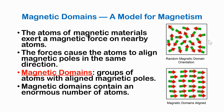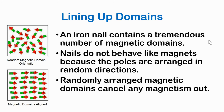Magnetic domains contain an enormous number of atoms — they're gigantic. More than billions, more than trillions, more than zillions — lots and lots and lots. An iron nail contains a tremendous number of magnetic domains. Nails do not behave like magnets because the poles are arranged in random directions. Randomly arranged magnetic domains cancel out any magnetism. So on the top left is what we would see with an iron nail that is not magnetic.